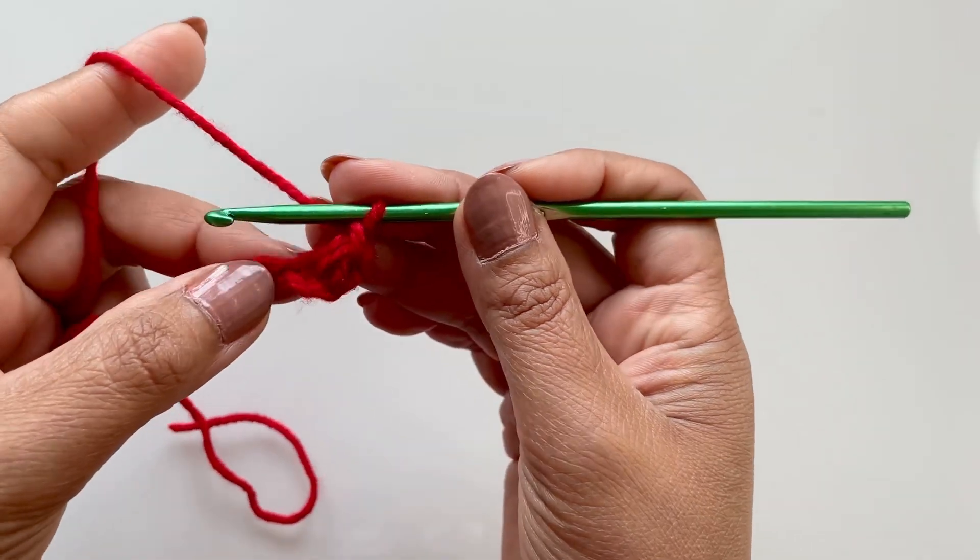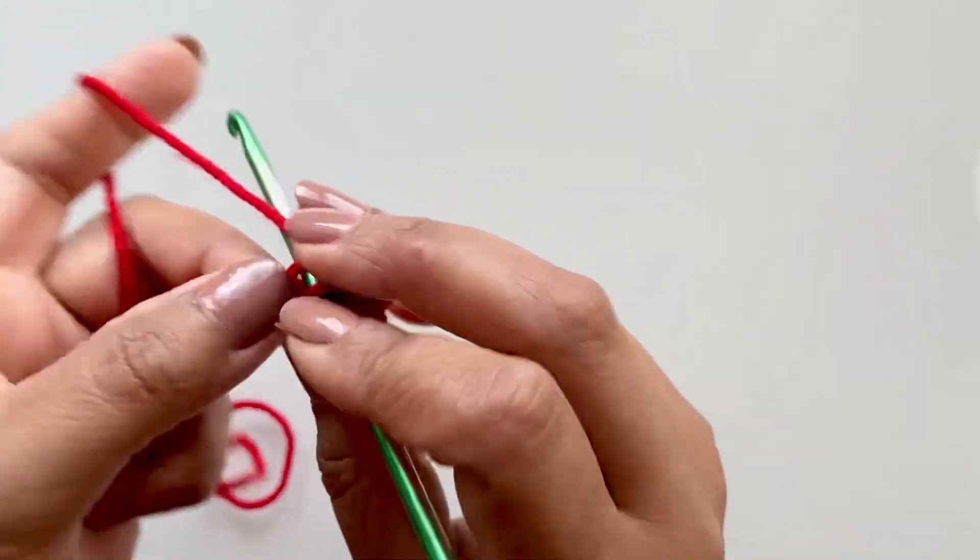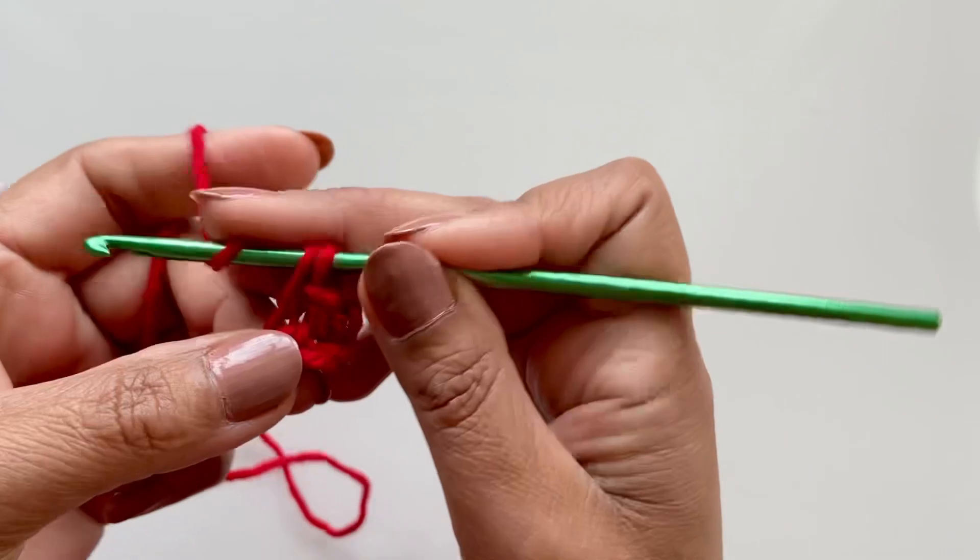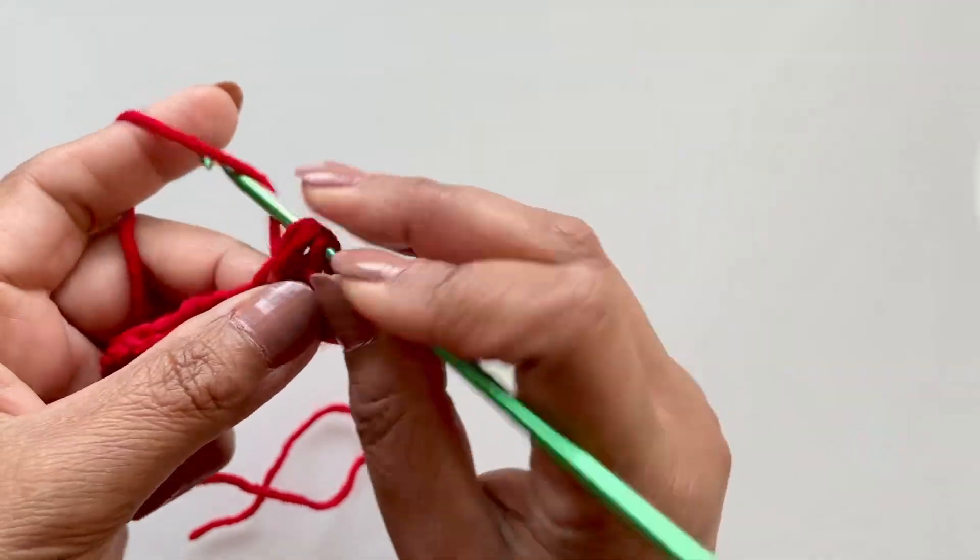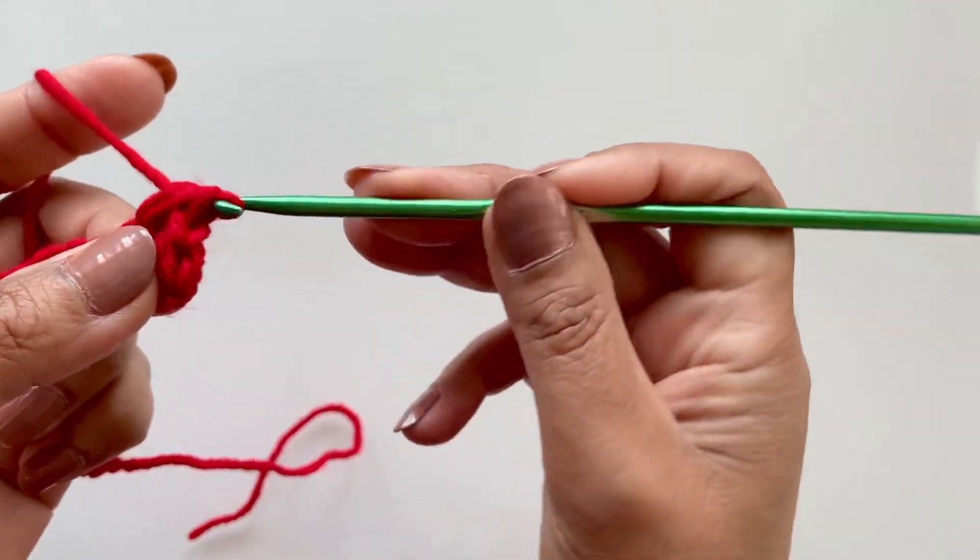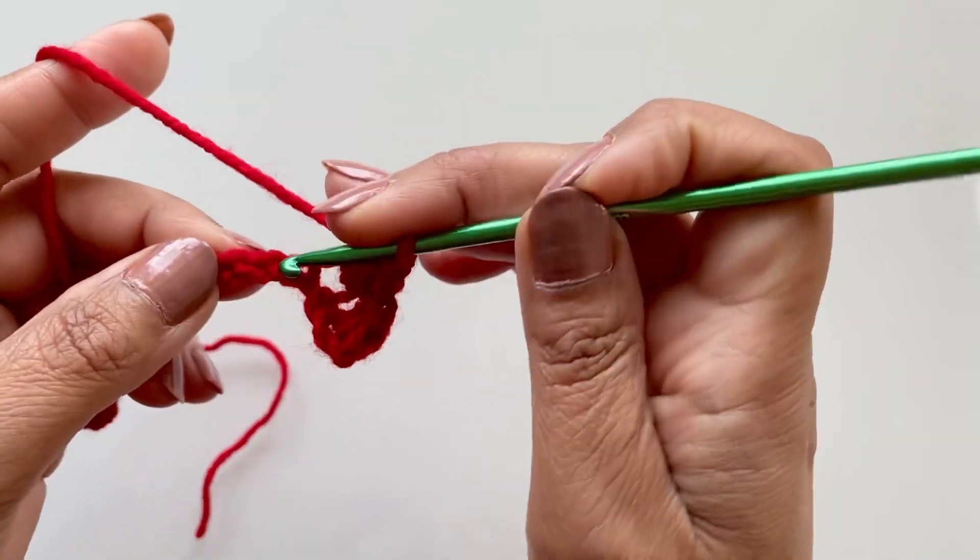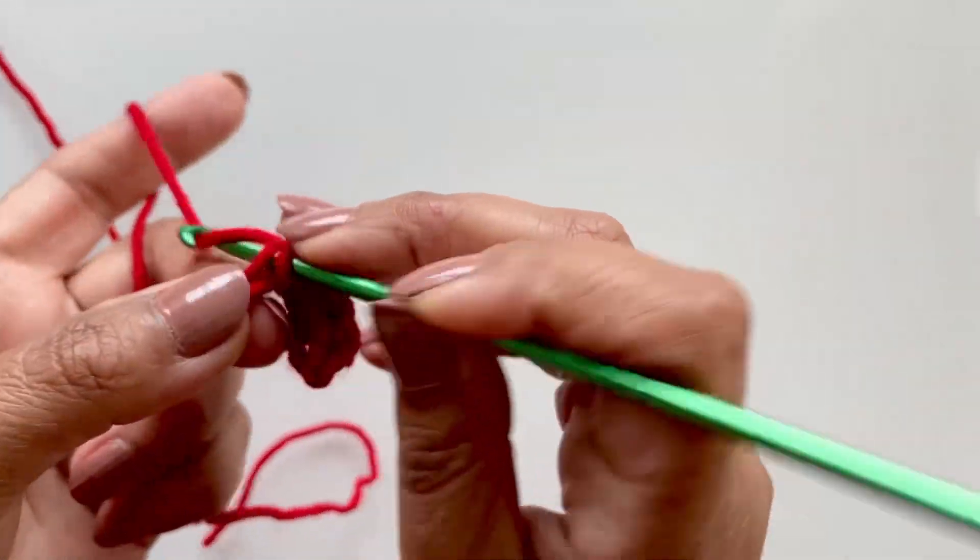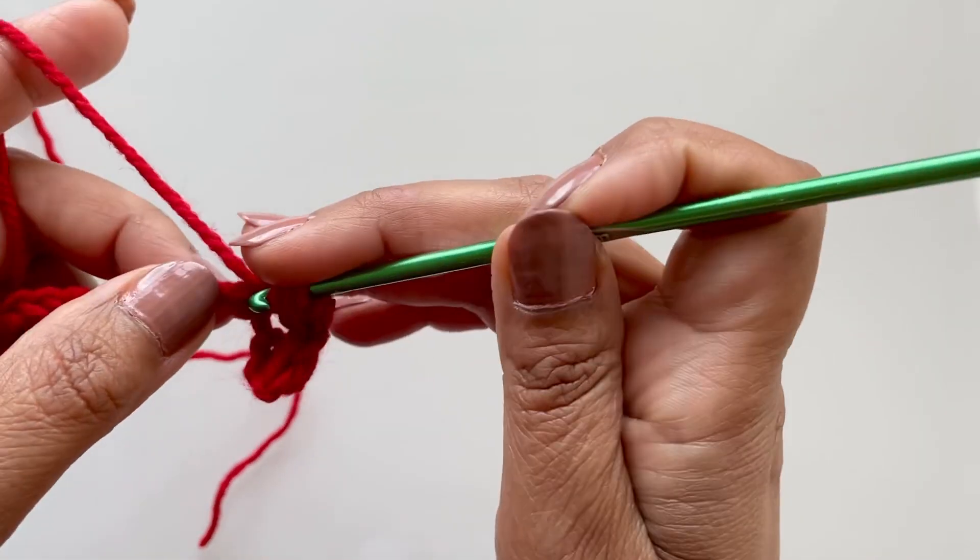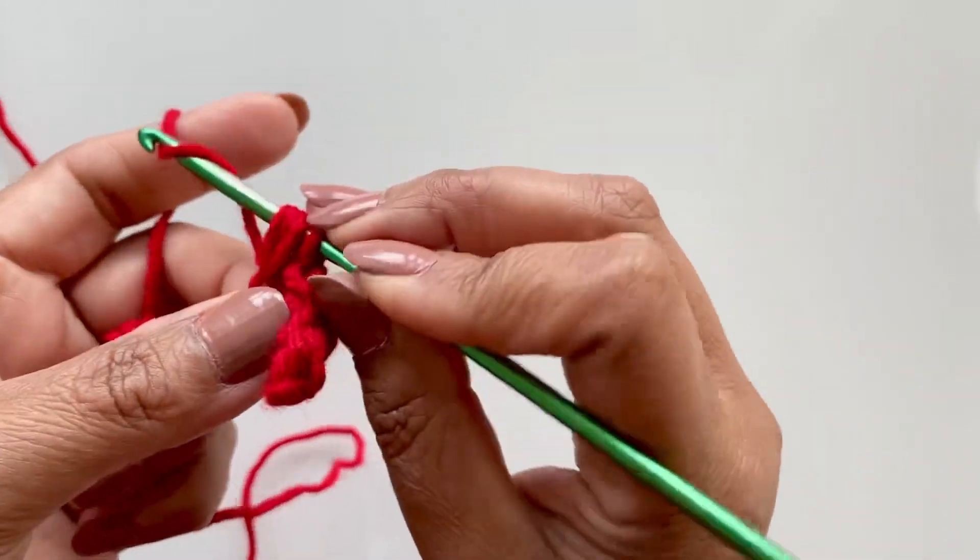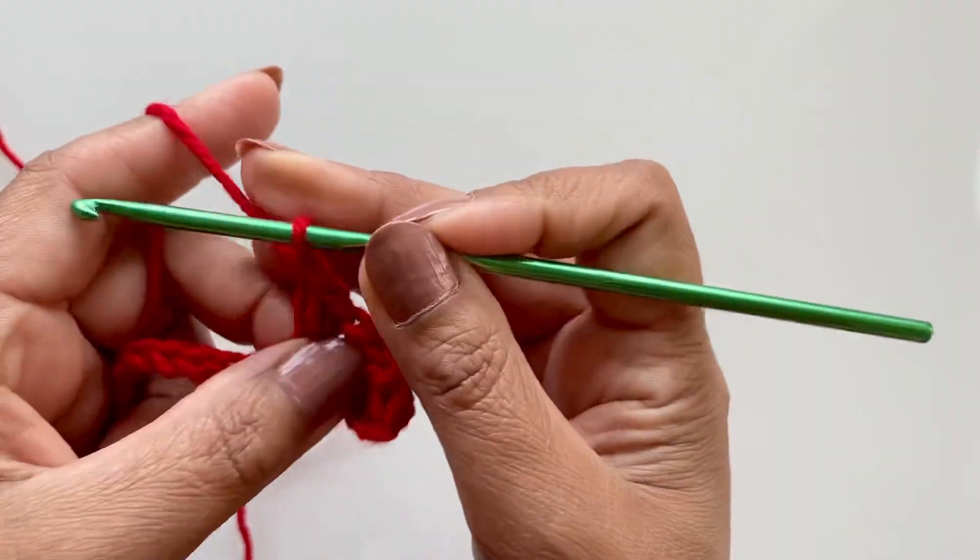So we've done that one, we miss the next one, we go into the next one, pull up a loop, yarn over and pull up another loop. Always have 4, chain 1, miss a stitch, go into the next one, pull up a loop, yarn over and pull up a loop. 4 loops, pull through all 4, chain 1.